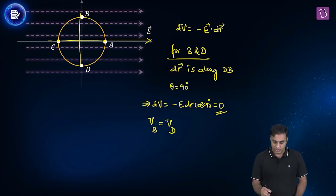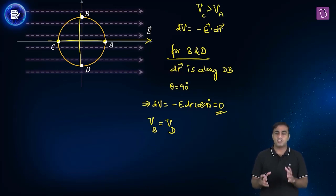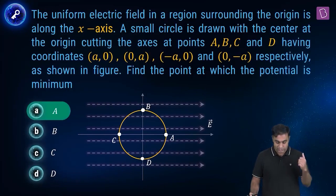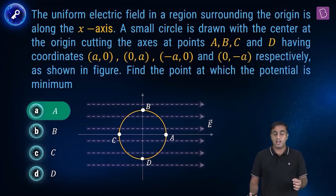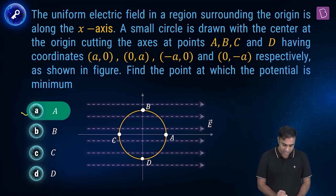So we can conclude that V at B and V at D happen to be the same. Moreover, we have concluded that Vc is greater than Va. With all this information, Vc is the highest, Va is the least, and Vb and Vd are equal and in magnitude in between Vc and Va. So the correct option happens to be A.